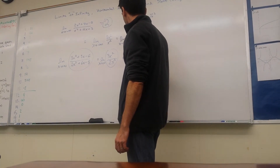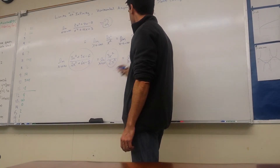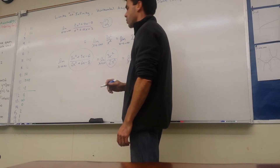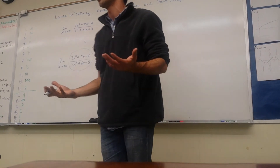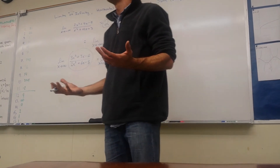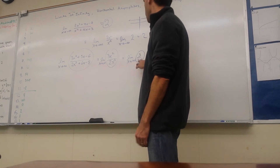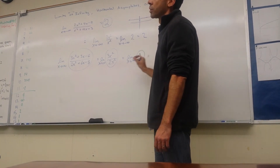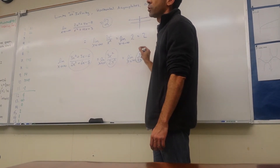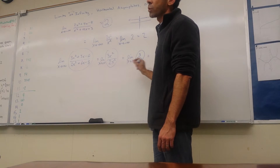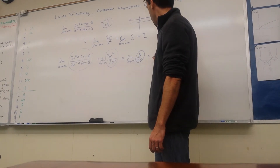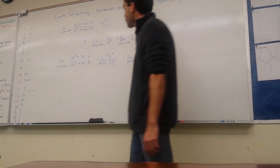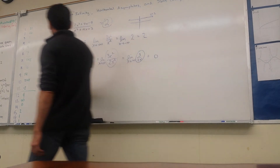Therefore we can reduce even more: 3x² over 2x³ reduces to 3 over 2x. Now what happens to 3 over 2x when x gets very, very large? It's 3 over 2 million, 3 over 2 billion, 3 over 2 trillion — we're getting close to zero. So the limit is zero.